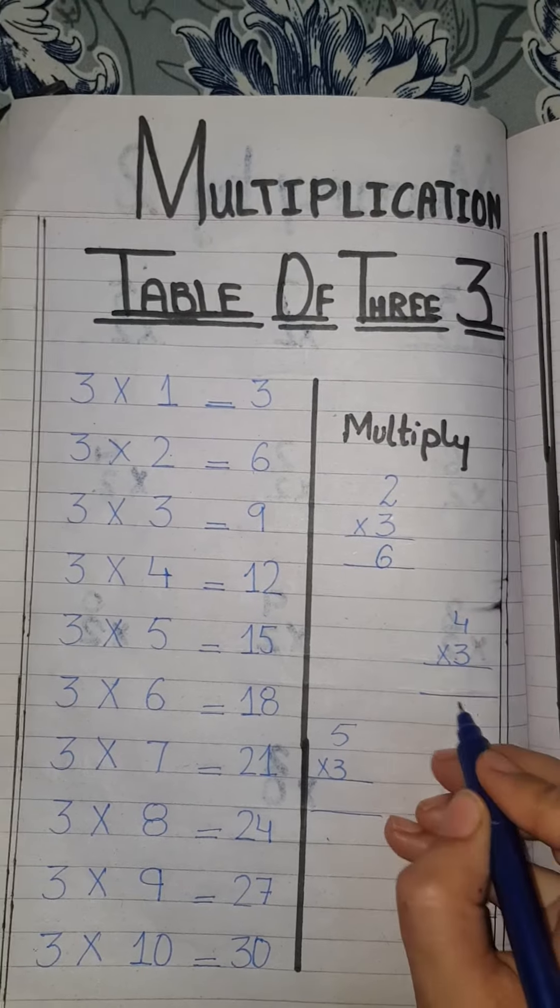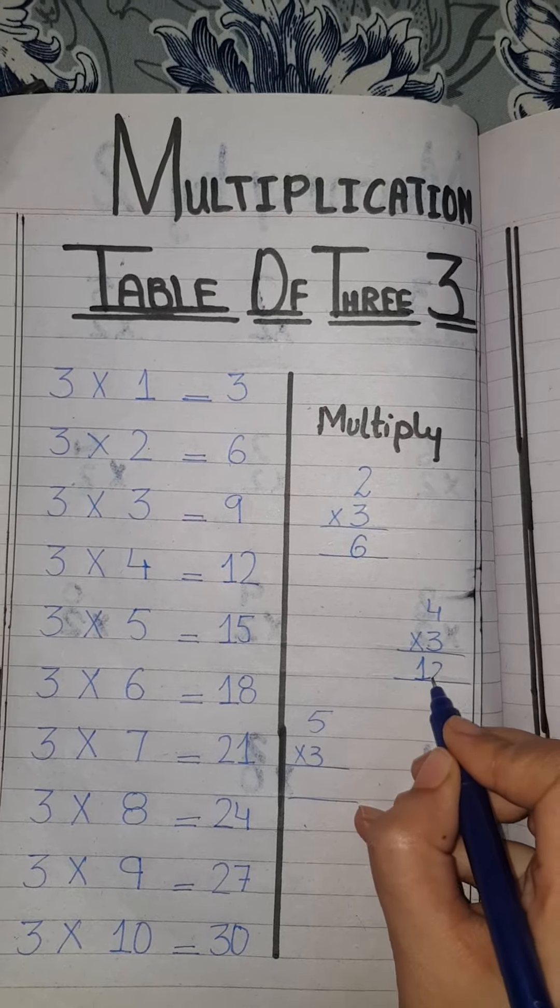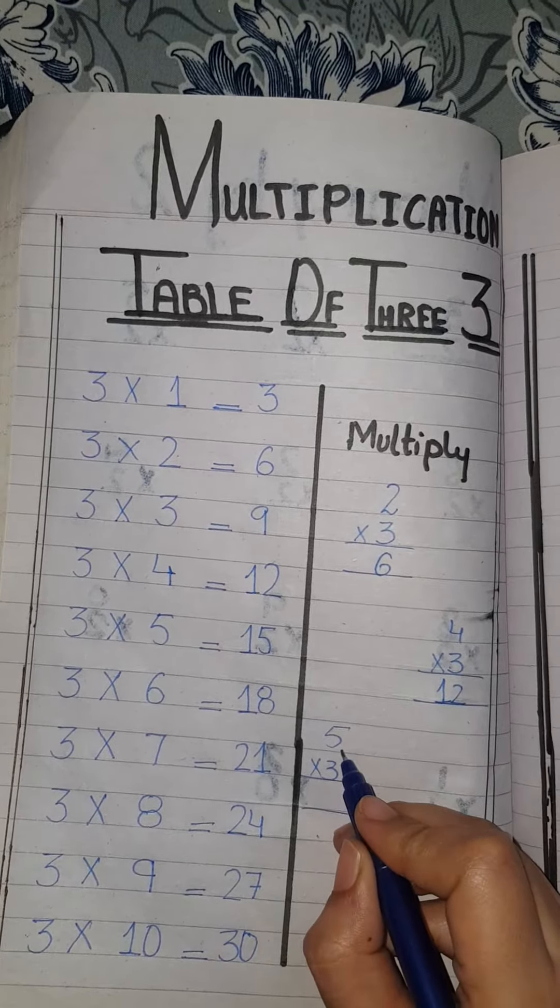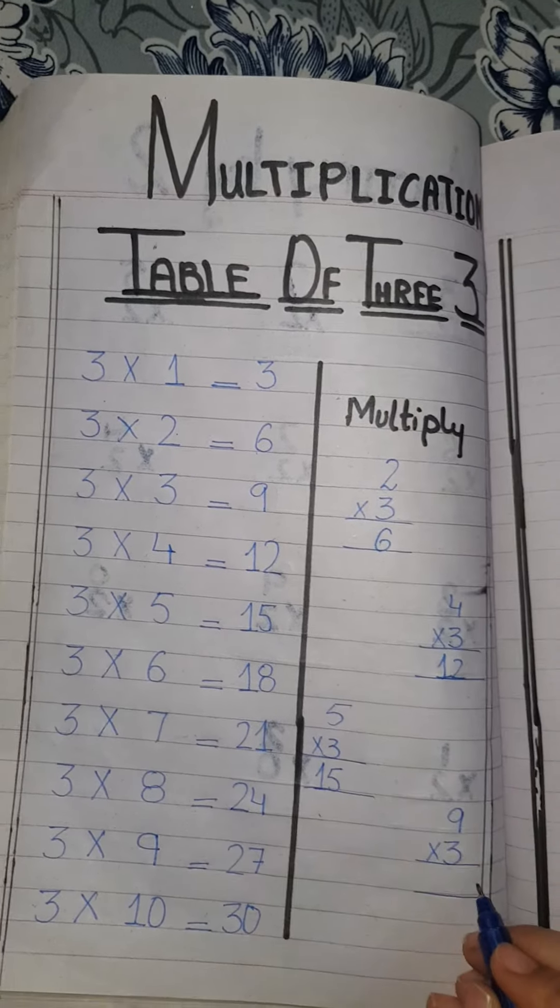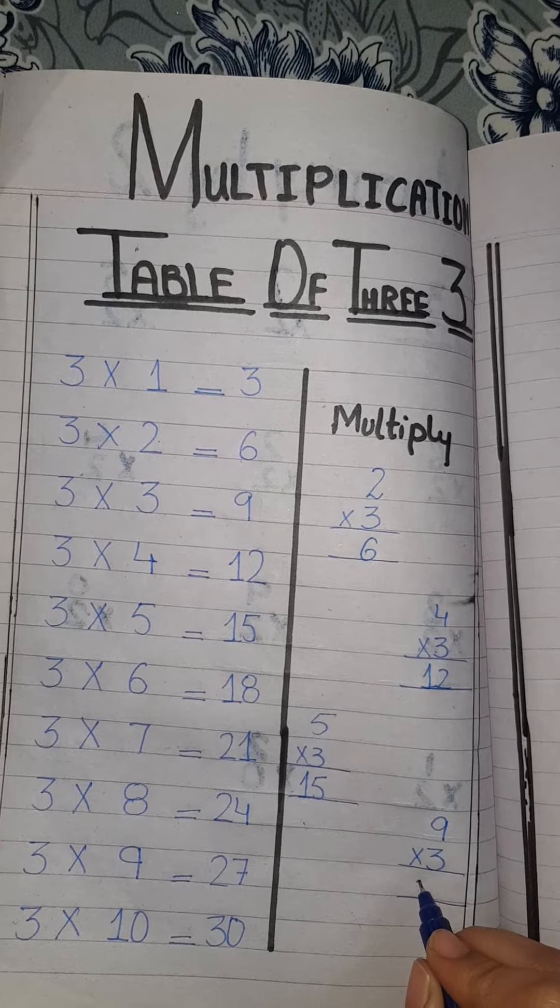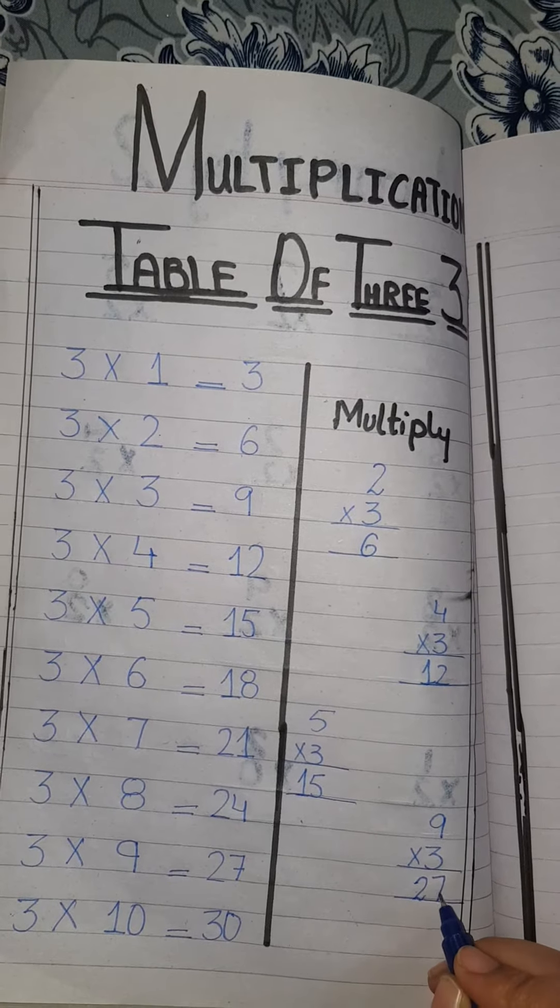3 times 4 is 12. 3 times 5 is 15. And 3 times 9 is 27.